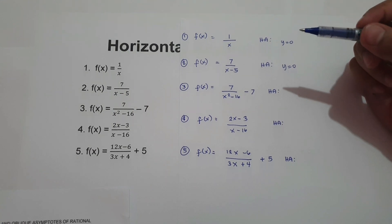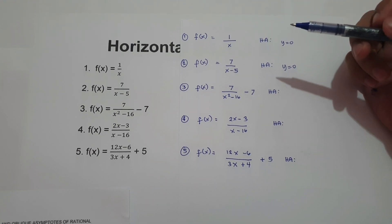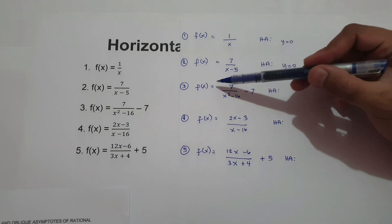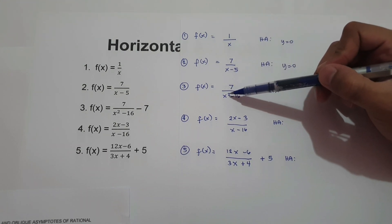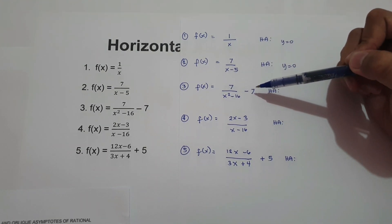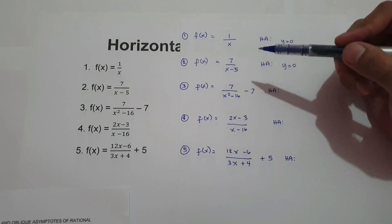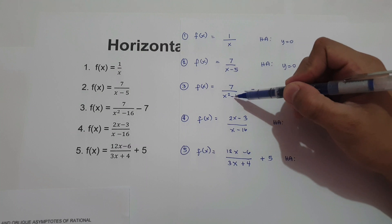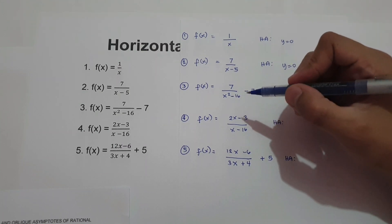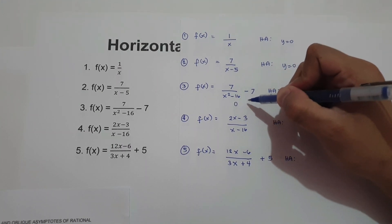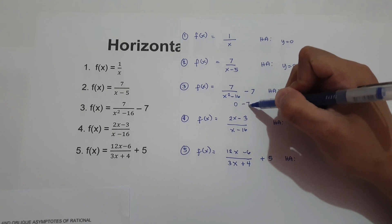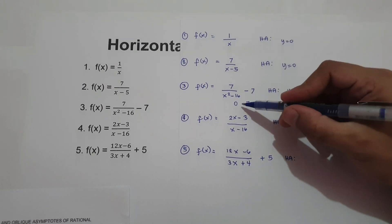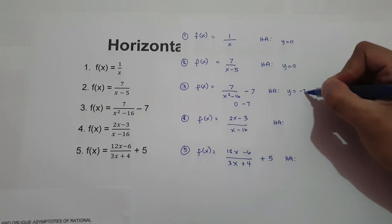What about number three? f of x equals 7 over x squared minus 16, minus 7. If we simplify 7 over x squared minus 16, the horizontal asymptote is zero, but we have minus 7. Therefore, our horizontal asymptote is zero minus 7, which is negative 7.